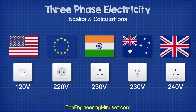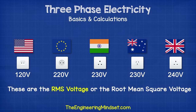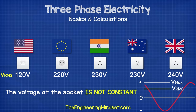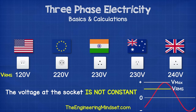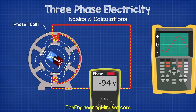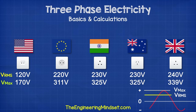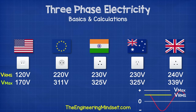The voltages from plug sockets are known as the RMS value, or root mean squared value — we'll calculate that shortly. The voltage coming out of the plug socket is not constantly 120, 220, 230, or 240 volts; the sine wave is constantly changing between positive and negative peaks, and the peaks are actually much higher. For example, in the US the voltage at the socket can reach 170 volts, Europe reaches 311 volts, India and Australia reach 325 volts, and the UK reaches 339 volts.